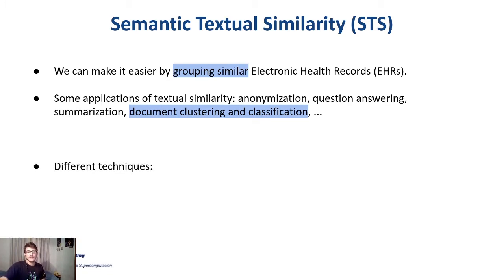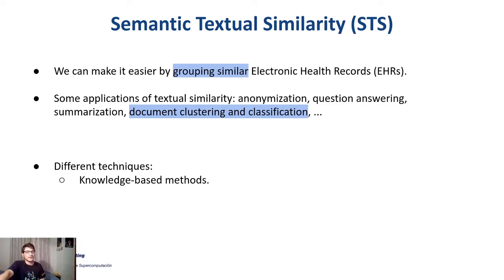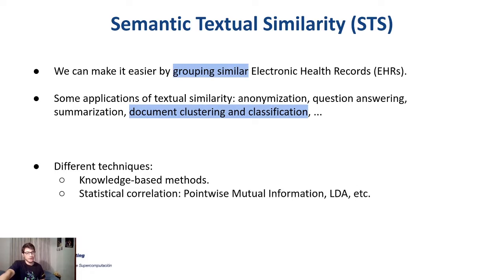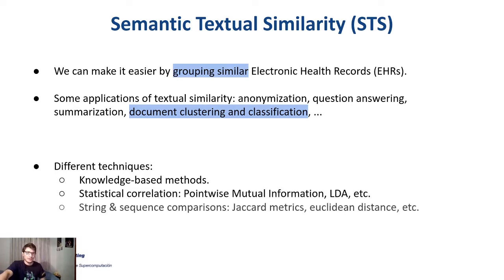There are many different ways in which we can perform semantic textual similarity. One of them is knowledge-based methods. We can also use statistical methods, and another would be string and sequence comparisons.